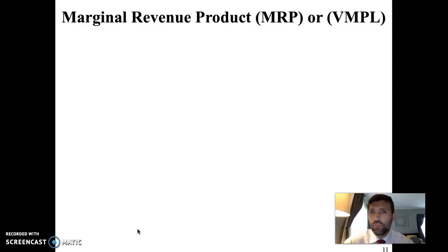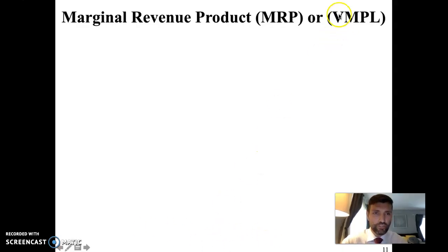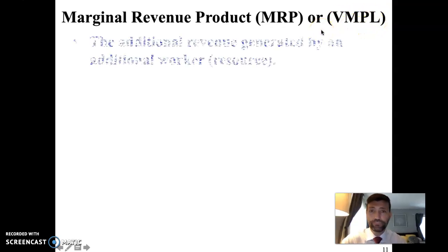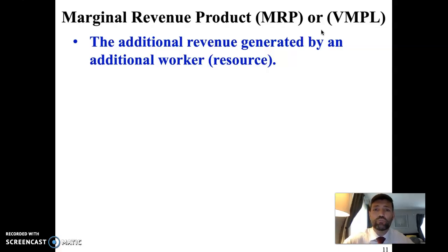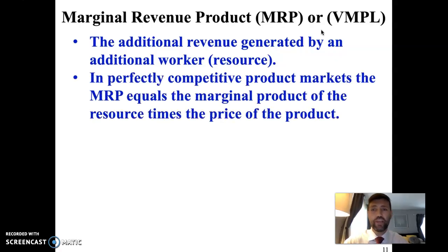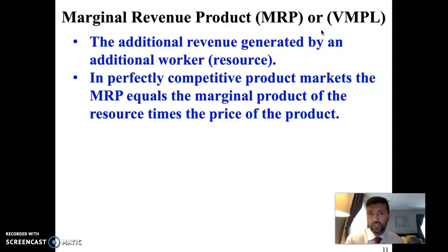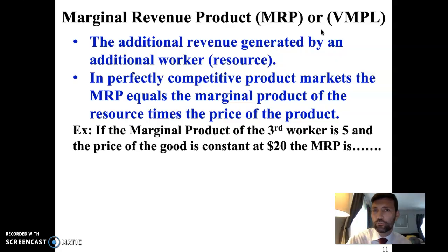This is what we refer to as marginal revenue product (MRP) — very similar to marginal revenue from the product market units, but now we stick 'product' on the end because a factor of production is producing a product. This is also sometimes called the value of the marginal product of labor (VMP_L) in some textbooks. The additional revenue generated by hiring an additional worker in a perfectly competitive market: marginal revenue product equals the marginal product of the resource times the price of the product. If the product price is constant, we multiply the productivity of the most recent worker by the product price to find that worker's MRP.